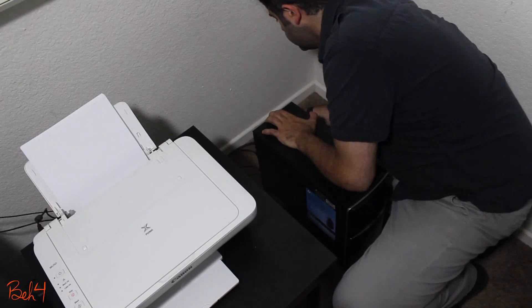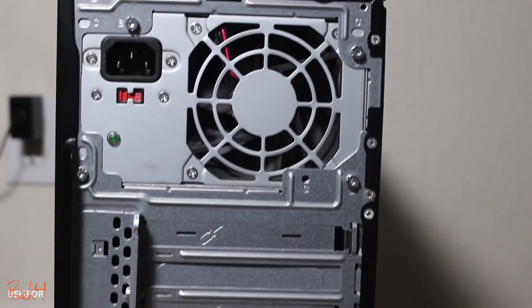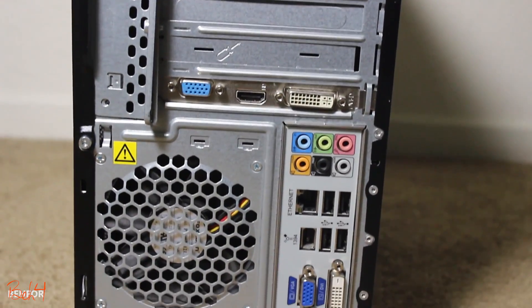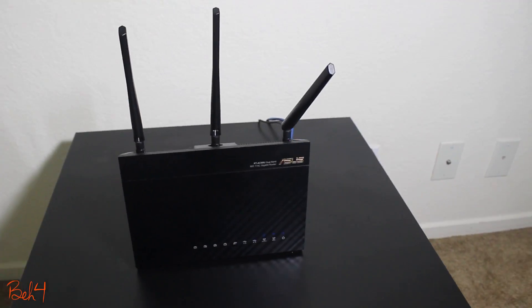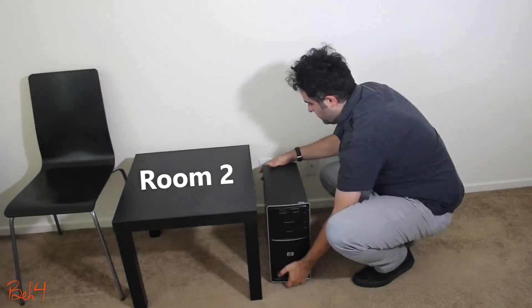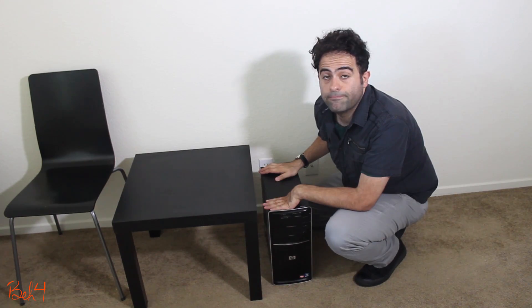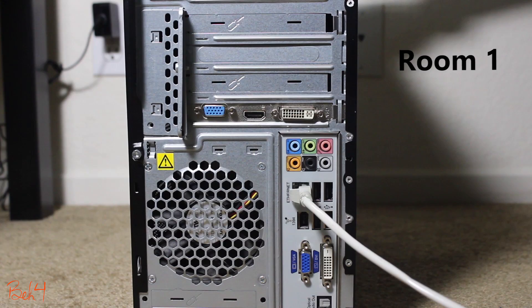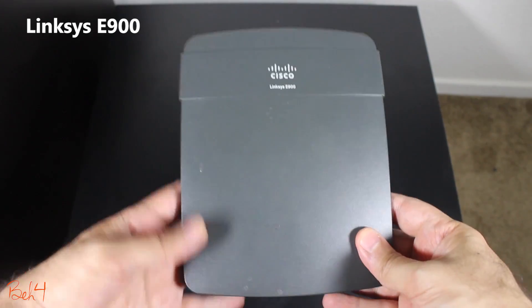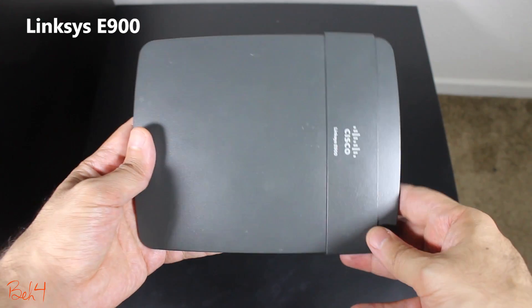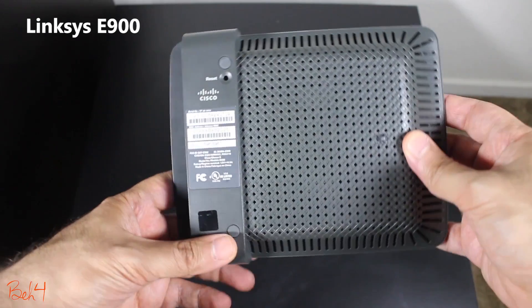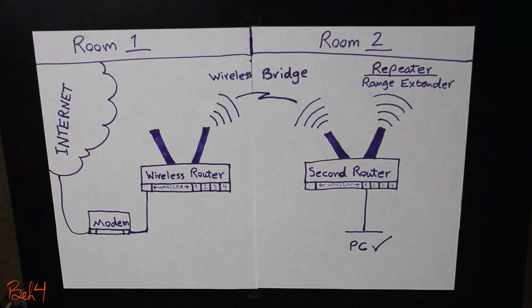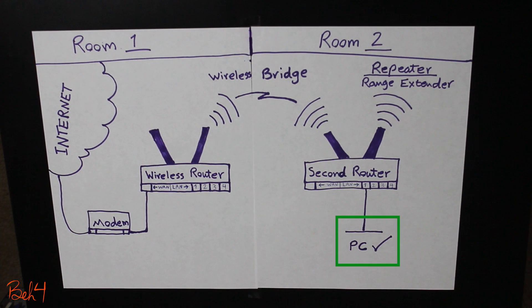Hey everyone, I'm Behfour here, and a few weeks ago I had to transfer my desktop computer from room 1, where my wireless router was located, to room 2, where there was no wireless router. This was a computer with no wireless network card, so I made a whole video about how I used my old Linksys wireless router to set up a repeater bridge, so the computer can have internet connection in the new location, which was room 2.